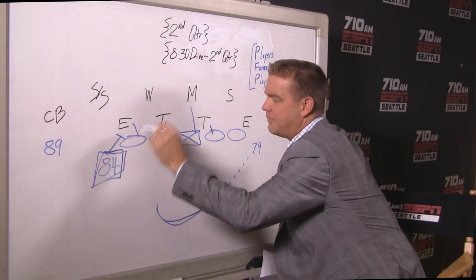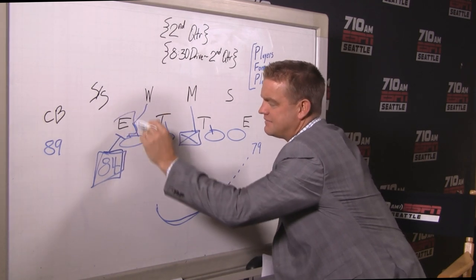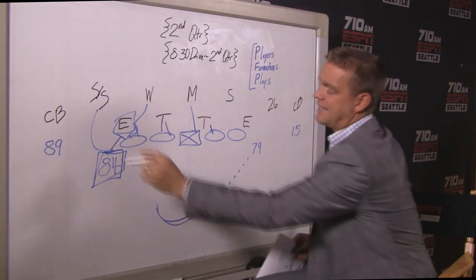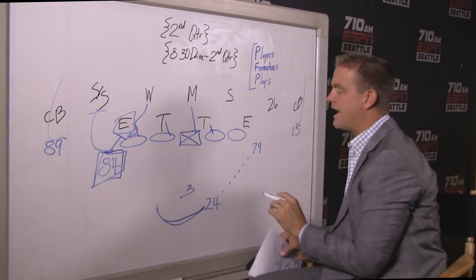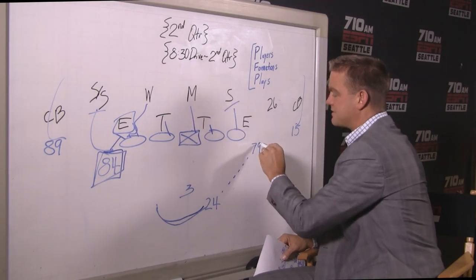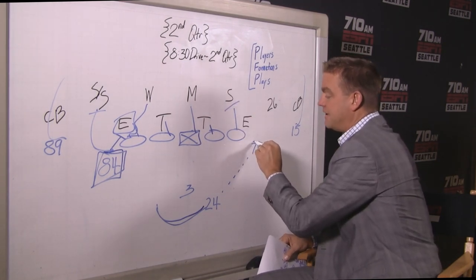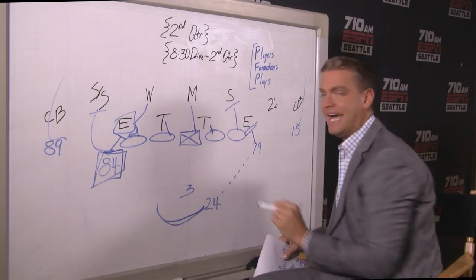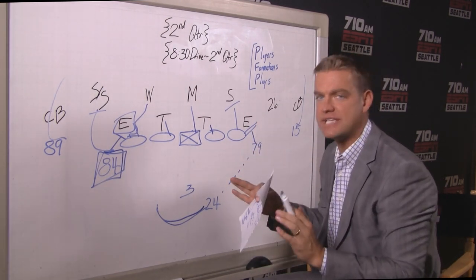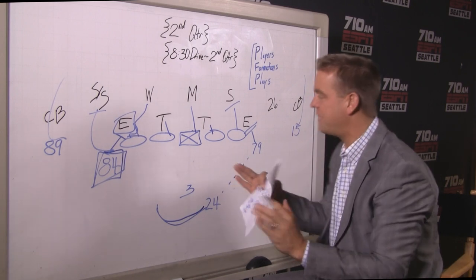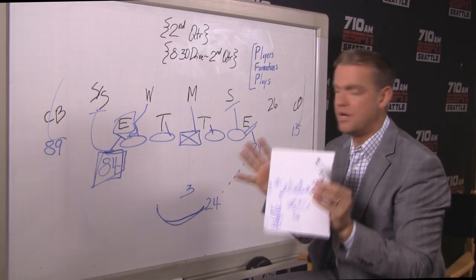Lots of blocking, everybody washes down. Okung leaves this end, giving Cooper a chance to get out onto the safety. You take everybody out of the play, and the big block becomes Gilliam's ability on that edge player to wash him down. In particular, watch his head placement, hand placement, and comfort level.